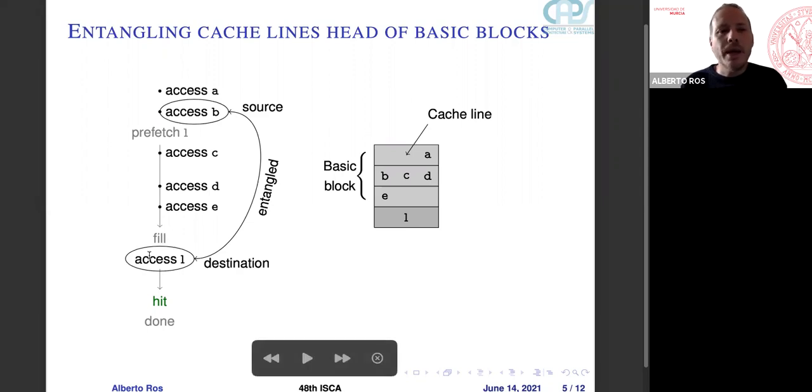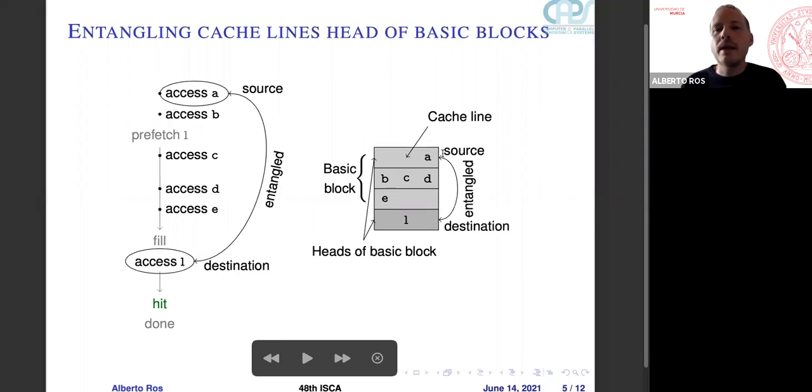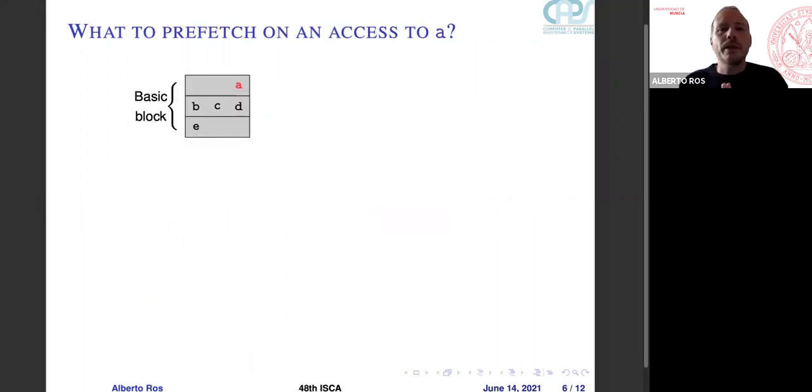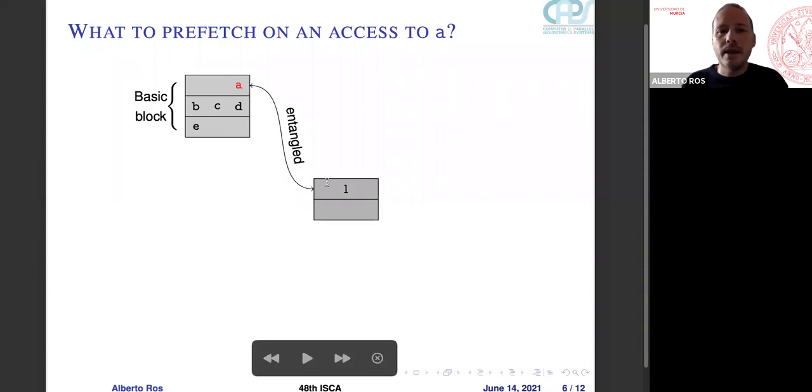We will not entangle the access B with the access L, but the head of the basic block of B, which is A. So this cache line will be the source and will be entangled with this cache line that will be the destination. Next time this cache line is accessed, we will trigger the prefetch for the destination. So what to prefetch when we access A? It's not just the entangled destination, but the whole basic block. So when we access A, we will prefetch the whole basic block of A, then the entangled destination L and the whole basic block, and if there were more entangled pairs to this access A, we will prefetch it too.